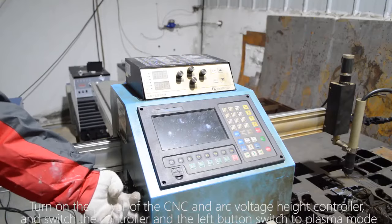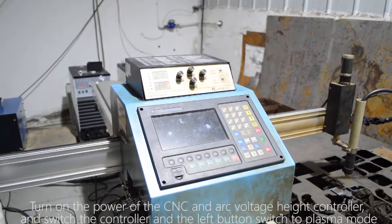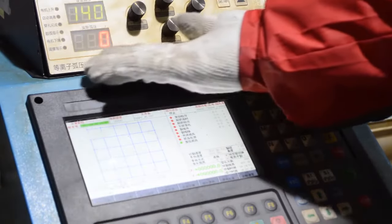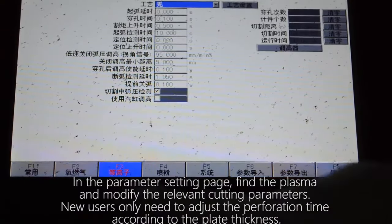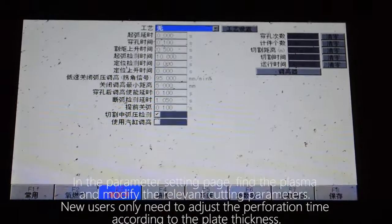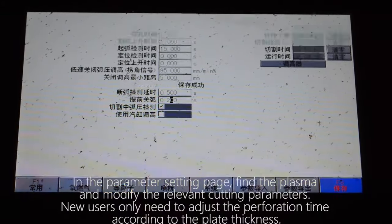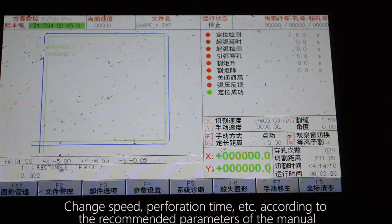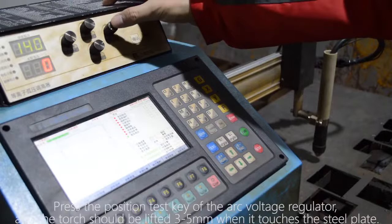Turn on the power of the CNC and arc voltage height controller and switch the controller and the left button switch to plasma mode. In the parameter setting page, find the plasma and modify the relevant cutting parameters. New users only need to adjust the perforation time according to the plate thickness. Change speed, perforation time, etc., according to the recommended parameters of the manual.